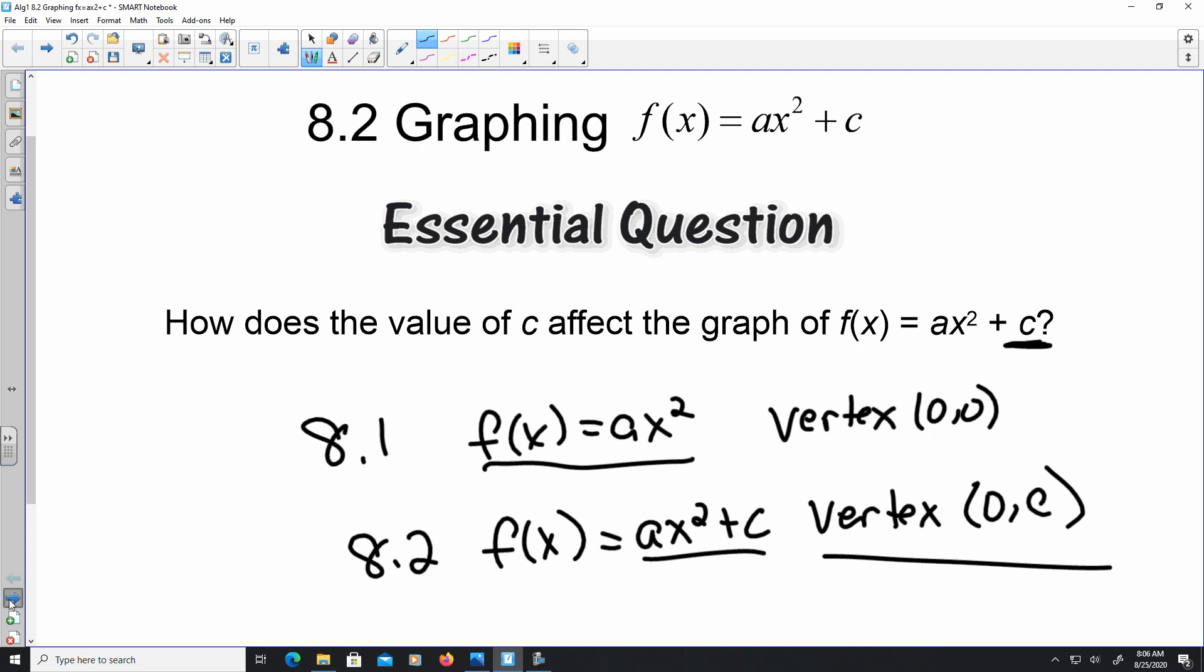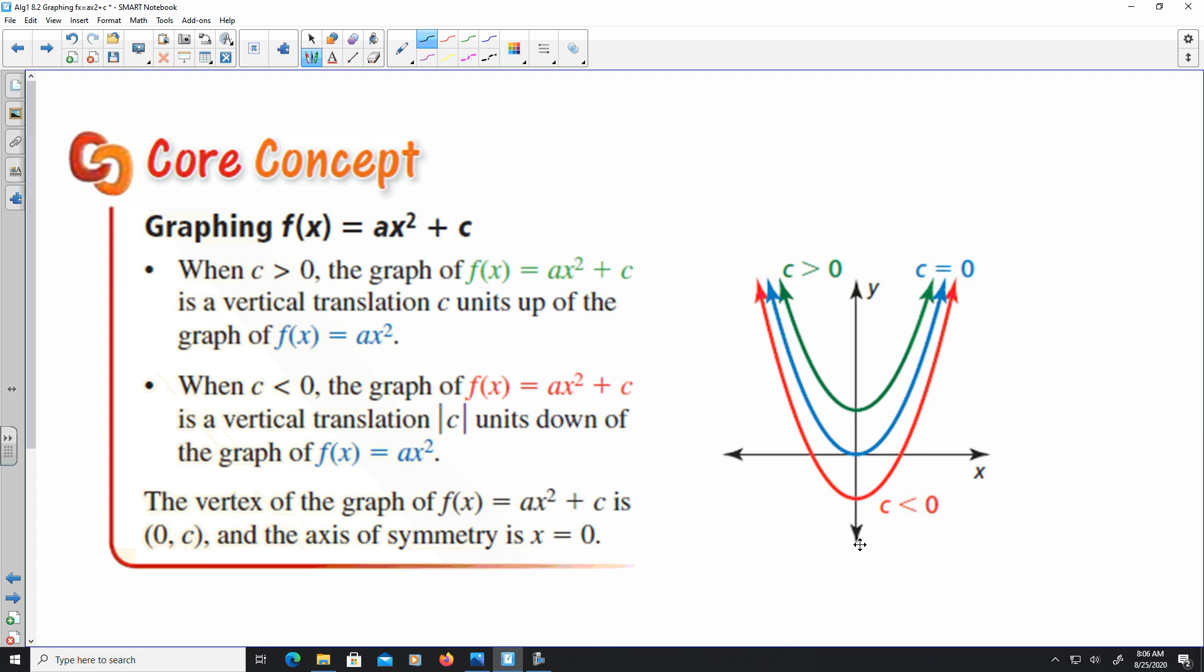So looking at this, the core concept here is anytime c is a positive number, the vertex is going to be shifted upward. It's translating positive c units up from that function. If c is negative, your vertex is moving downward c units. Everything else remains the same. The axis of symmetry will still be x = 0, the vertical stretch, the vertical shrink comparison is still in play, and nothing changes from that.